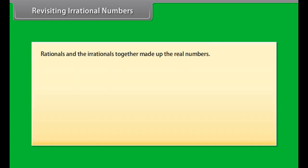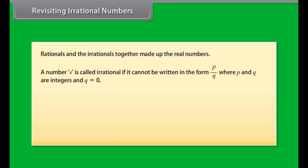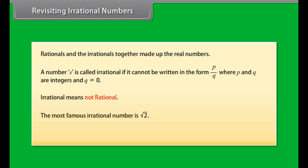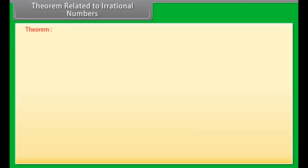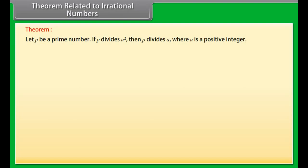Revisiting irrational numbers. We know that rationals and irrationals together make up the real numbers. A number S is called irrational if it cannot be written in the form P upon Q, where P and Q are integers and Q is not equal to 0. Irrational means not rational. The most famous irrational number is square root of 2. Other examples are Pi, which is equal to 3.141592..., and 0.10110111011110... and so on.